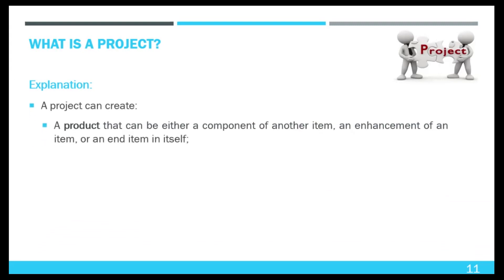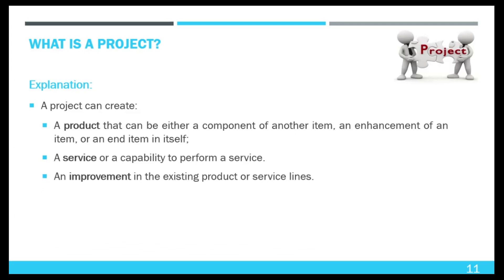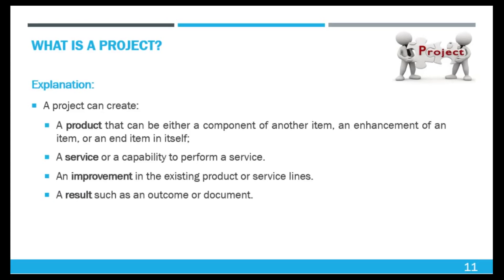A project can create a product that can be either a component of another item, an enhancement of an item, or an end item itself. A project can create a service or a capability to perform a service — that is, a business function that supports production or distribution. A project can create an improvement in existing product or service lines, such as a Six Sigma project undertaken to reduce defects. Or a project can create a result, such as an outcome or document — for example, a research project that develops knowledge to determine whether a trend exists or a new process will benefit society.